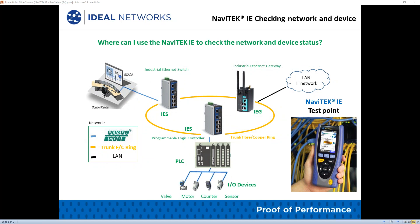Where can you use the Navitech IE to check the network and device status? It's pretty much everywhere over your Profinet network. The Navitech IE is the first handheld industrial Ethernet Profinet network field tester on the market. All physical-to-protocol test functions are integrated into one unit with easy touchscreen access. It covers the majority of field operation test requirements for Profinet networks, and it is easy for users to set up Profinet devices without a PC or laptop. The Navitech IE also includes all the functionalities of the Navitech NT Pro copper and fiber test interface.